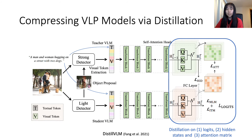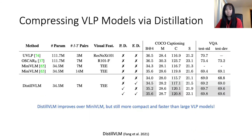In addition, distillation can be performed at three levels: final logits, hidden states, and attention matrix. With distillation, distilled VLM improves over Mini-VLM, but is still more compact and faster than large VLP models.